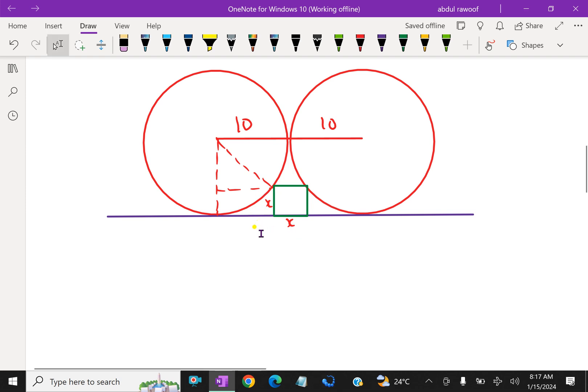Look at here, let this horizontal distance be y. We know that this square has side x, here also we have x.